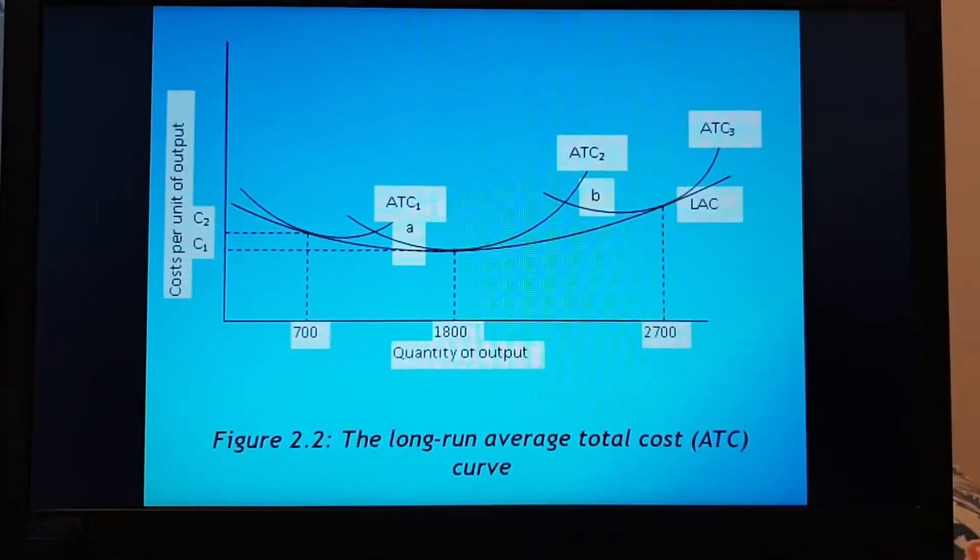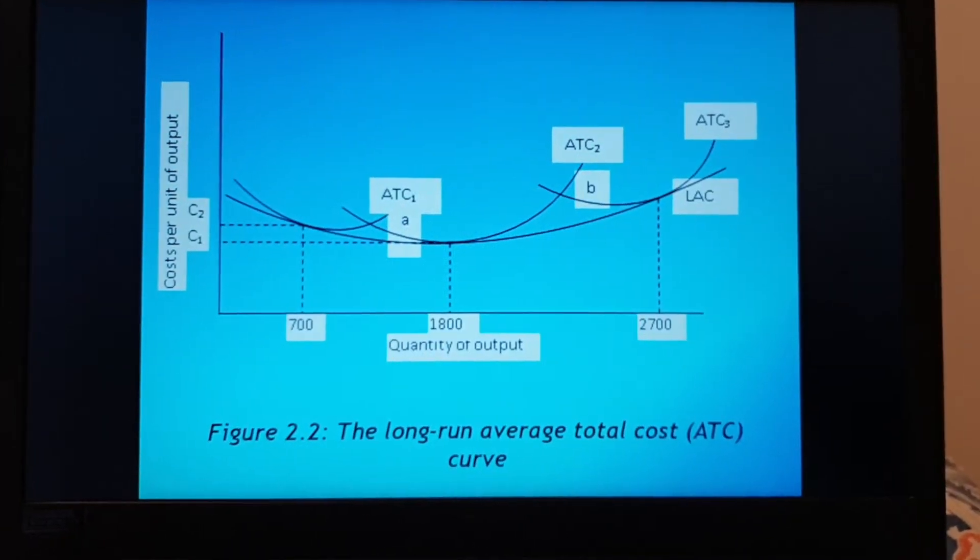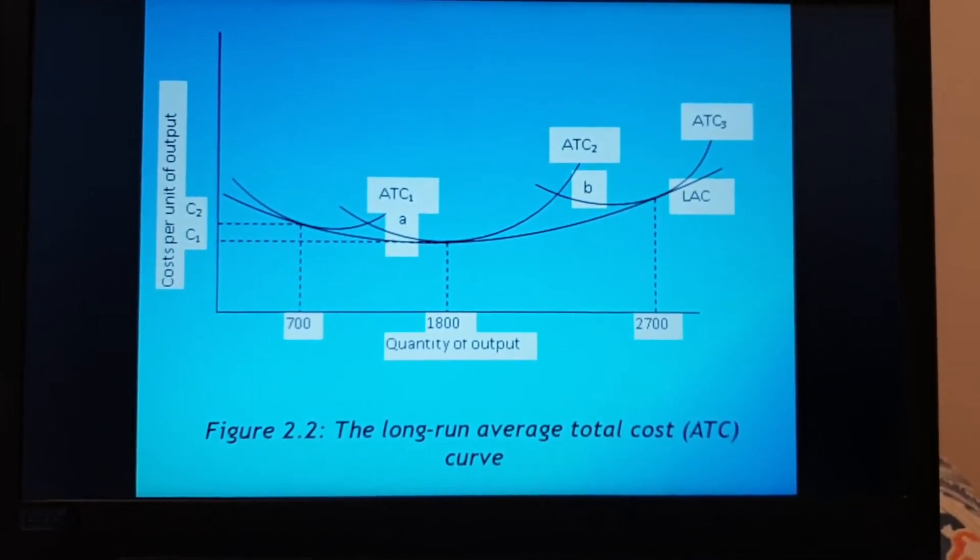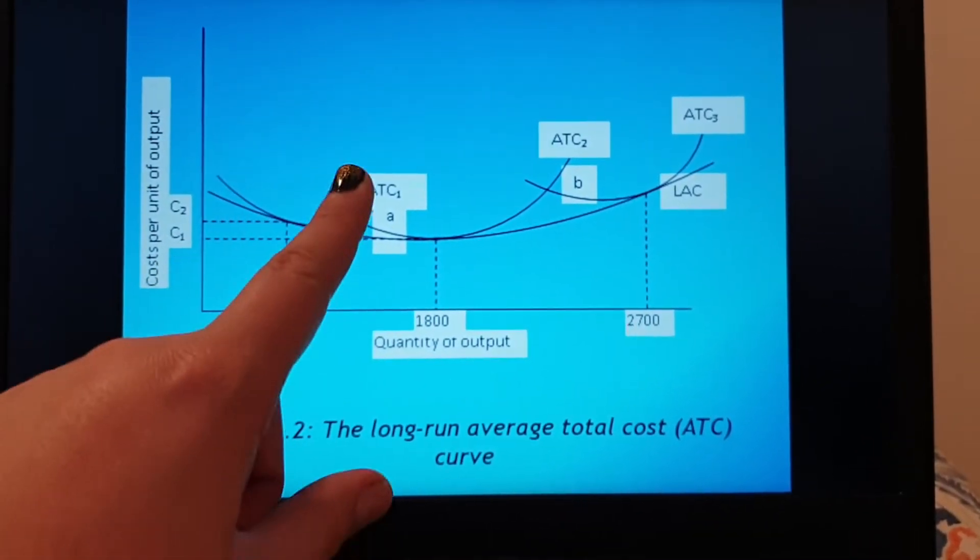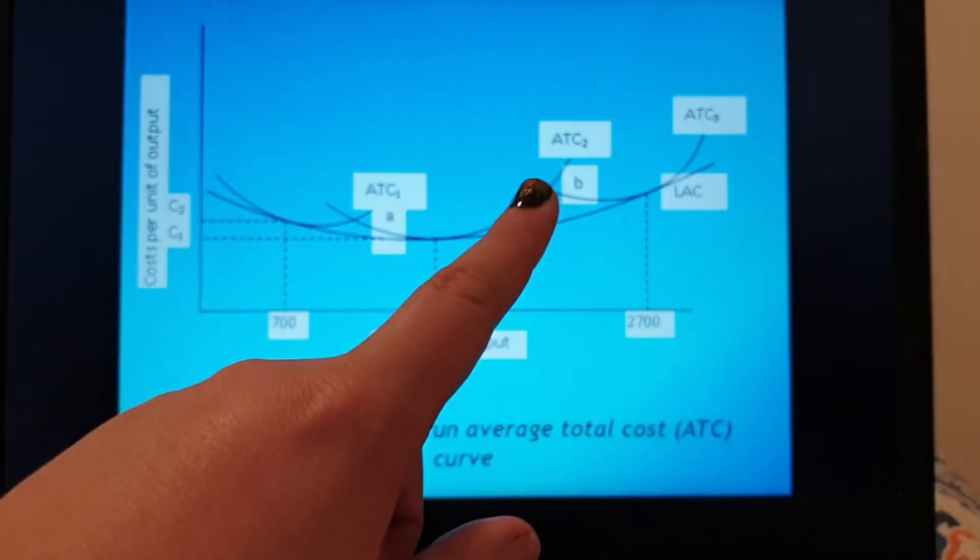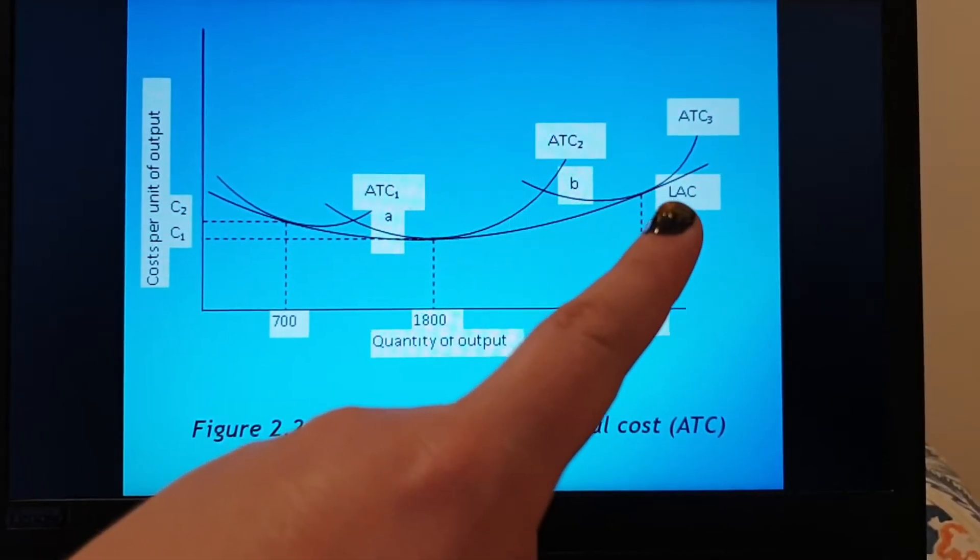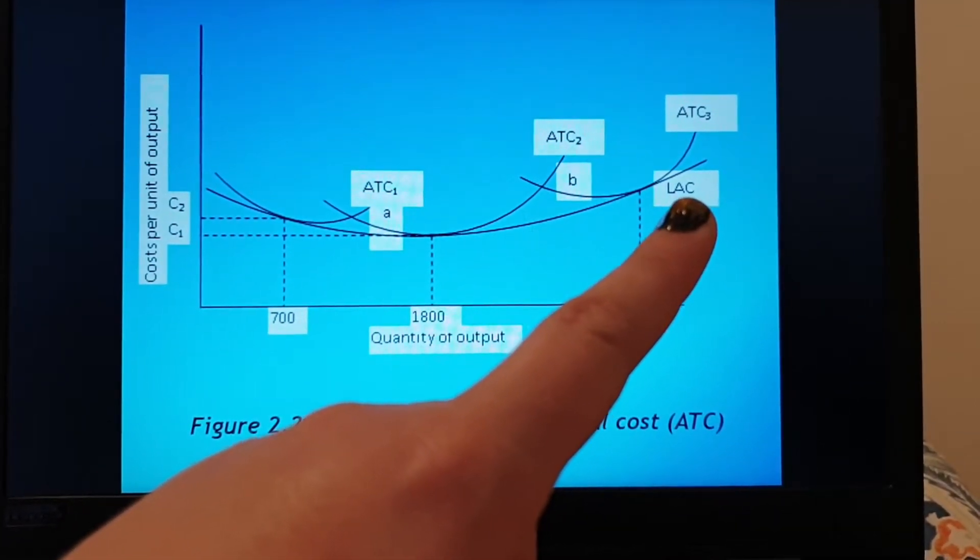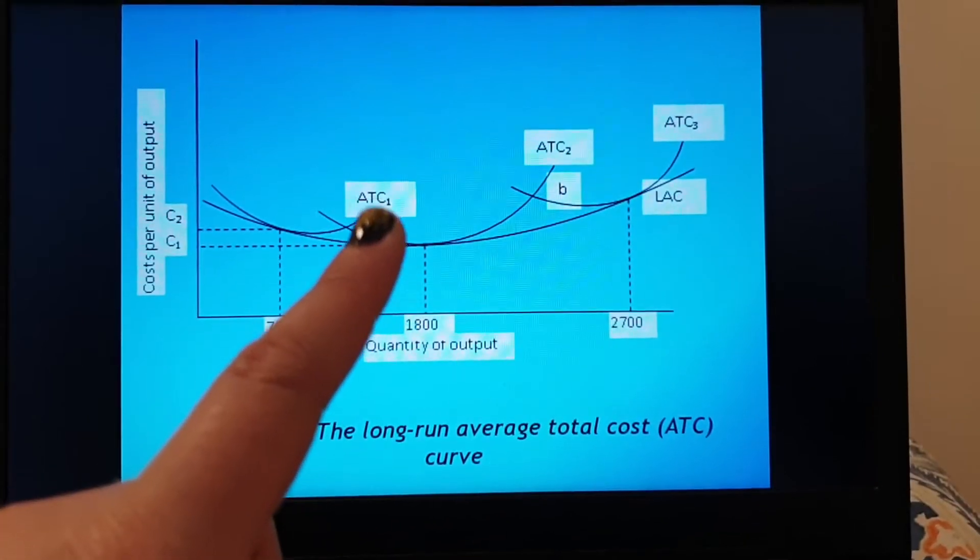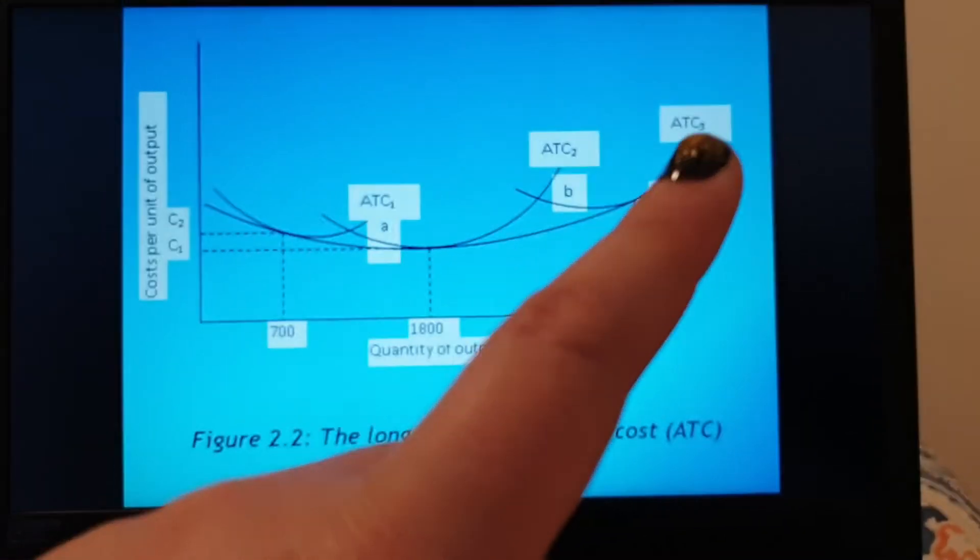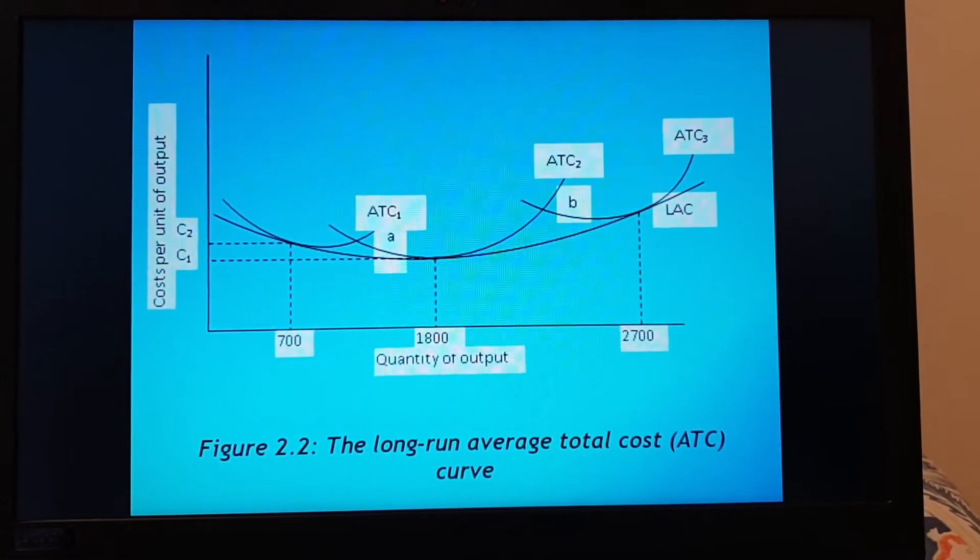Here's a graph you don't have to know this graph they just explain it to you. Three different scenarios if a farmer decided to produce at point A, point B or there at ATC three. And the LAC stands for long run average cost. ATC one, ATC two, ATC three stands for average total cost one, two and three.